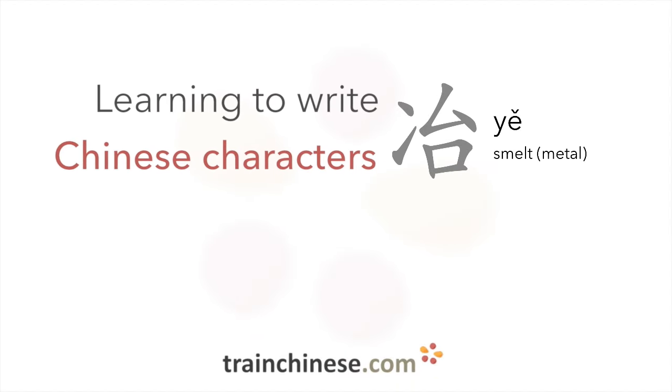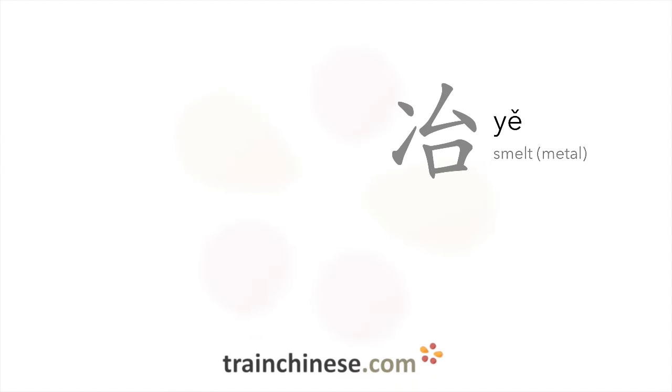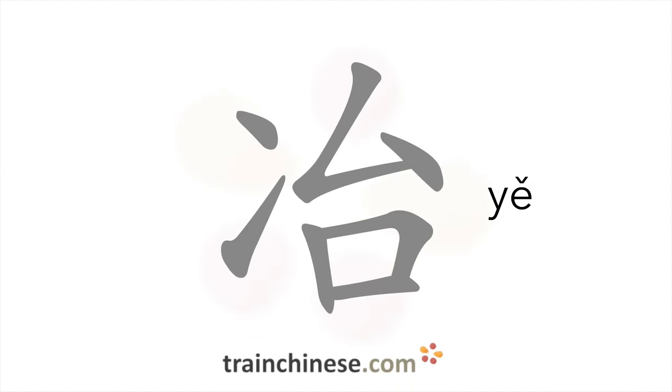Let's take a look at this character: 叶. It's written with seven strokes.